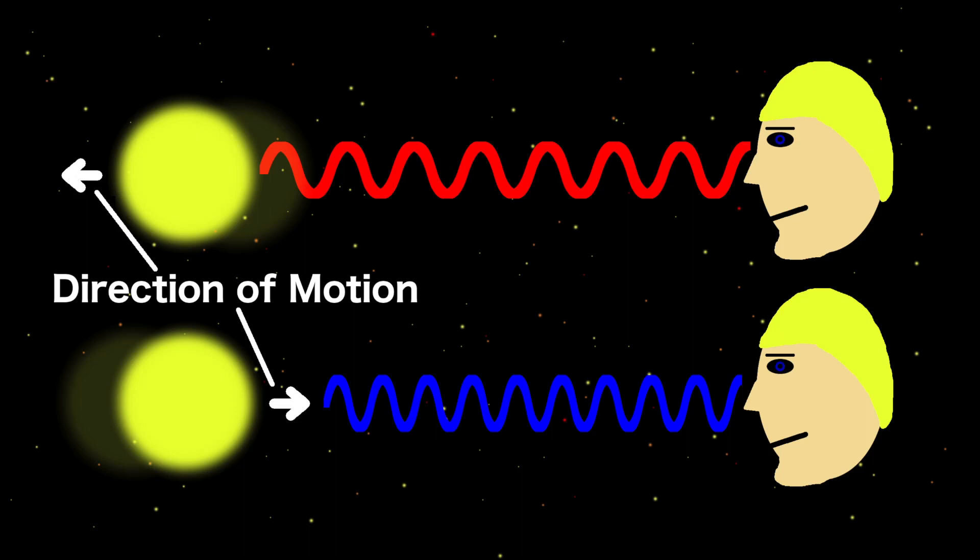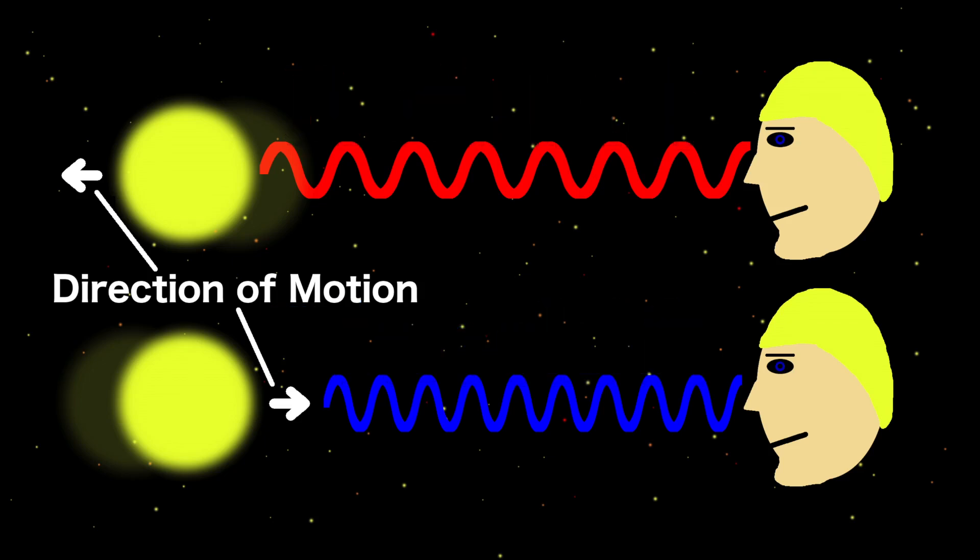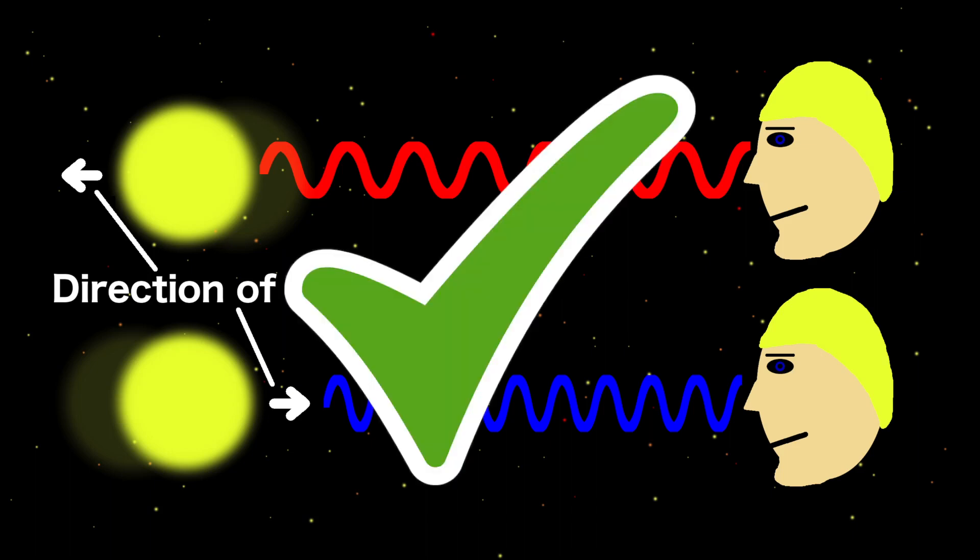This is called the red shift of light when the source is moving away, and blue shift when moving towards the point of measurement. The Ibis-Stillwell experiment measured the frequency of light in motion, and the results matched up perfectly with Einstein's predictions.